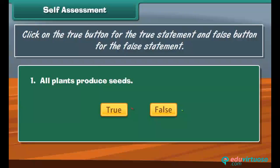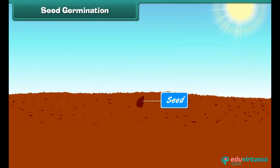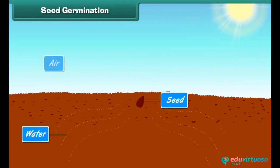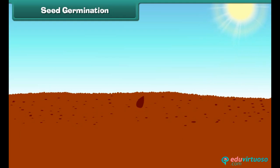Seed germination: seeds start germinating in favourable conditions. Water, air, and warmth are required for a seed to germinate. When a seed absorbs water, it swells up and the seed coat becomes soft. The roots of the germinating plant appear first and grow towards the earth.